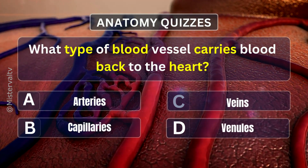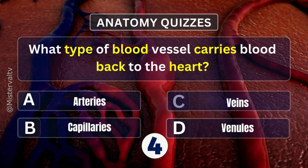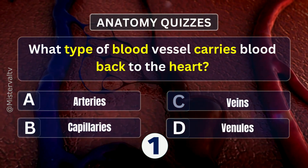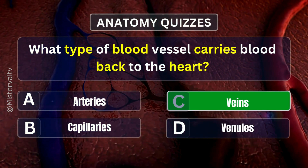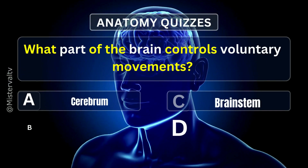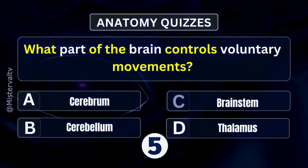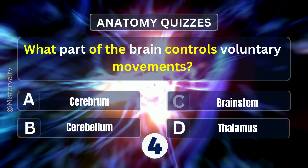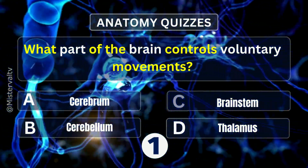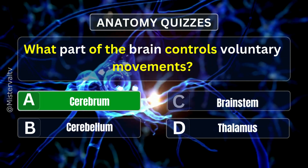What type of blood vessel carries blood back to the heart? Answer. C. Veins. What part of the brain controls voluntary movements? Answer. A. Cerebrum.